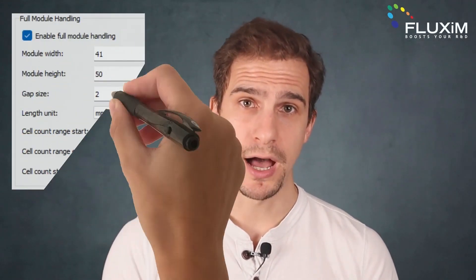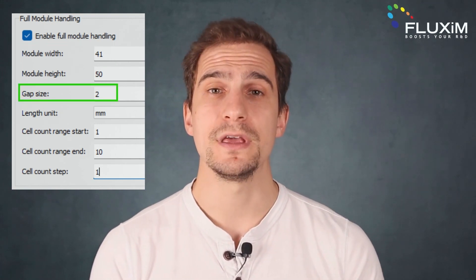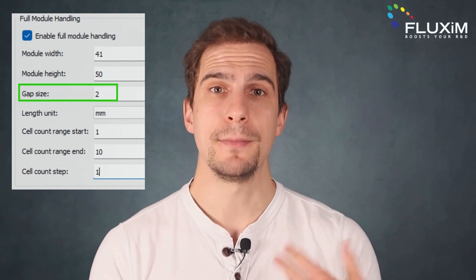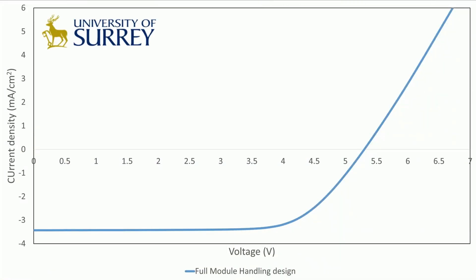We started by considering a module height of 50 mm and a module width of 41 mm. The interconnection width is fixed at 2 mm, while the amount of sub-cells varies from 1 to 10. We use the experimental JV curves provided by the University of Surrey of the lab-scale slot-dye-coated perovskite solar cell to perform the scale-up prediction, which you can see here.